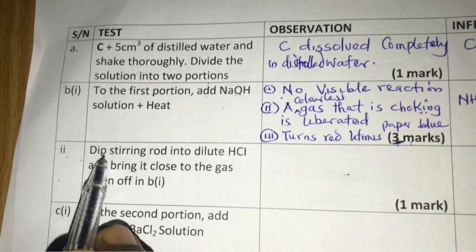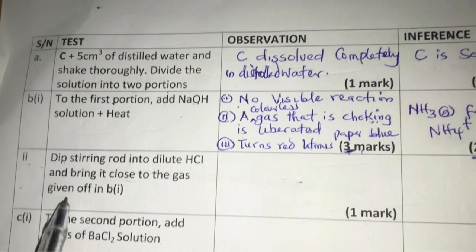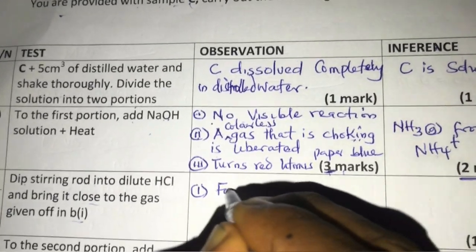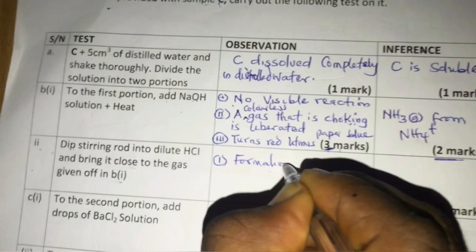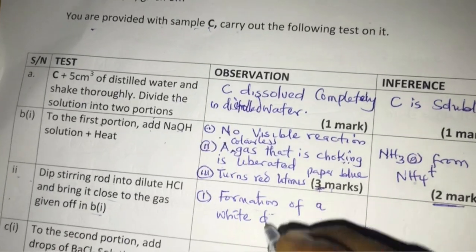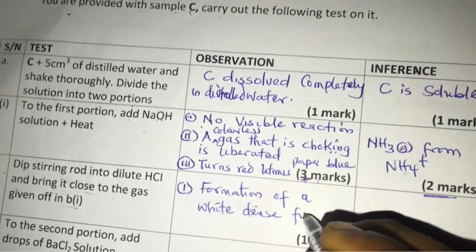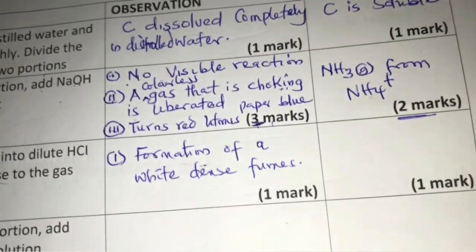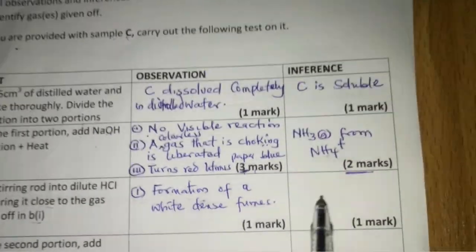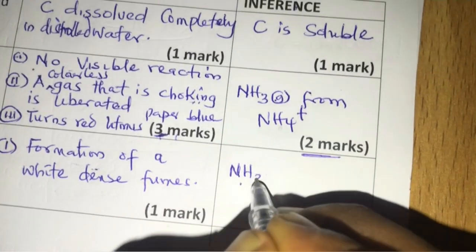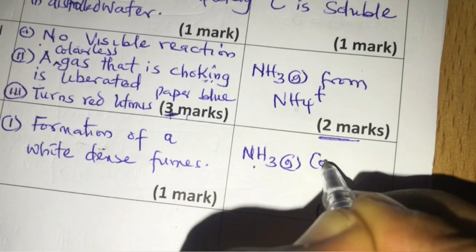For the confirmatory test: dip a glass rod in dilute HCl and bring it close to the gas. A white dense fume — or dense white film — is observed. Inference: NH₃ gas is confirmed. That's the confirmatory test for ammonia, giving one mark.